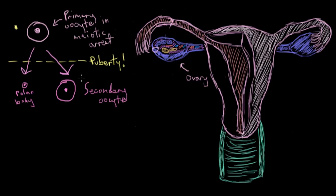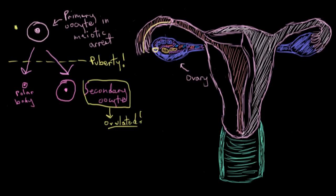This large secondary oocyte is what ends up getting ovulated. You might be wondering when the second step of meiosis happens. Ovulation occurs with the secondary oocyte coming out of the ovary. It then travels into the uterine tube, where sperm comes along and fertilizes the egg.